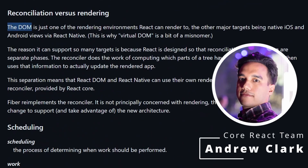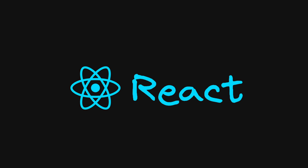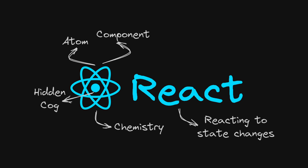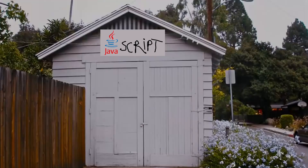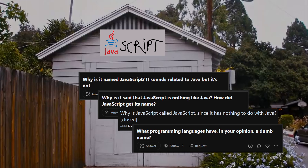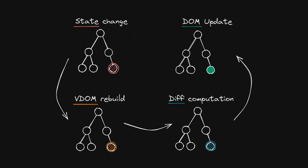We can also find more naming problems in the React ecosystem itself. In the words of Arthur Clark, the DOM is just one of the rendering environments React can target — the other major targets being native iOS and Android views via React Native. This is why 'virtual DOM' is a bit of a misnomer. React's name is not one straightforward concept; over time it became a group of multiple different associations. It shouldn't be mistaken as a reactive programming reference, much like how JavaScript's name referring to Java caused more confusion than clarity.